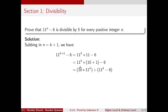On the next line, we have 11 to the k times the quantity 10 plus 1, splitting the 11 as 10 plus 1 and leaving the minus 6 as is. We then distribute 11 to the k back into the bracket, giving us 10 times 11 to the k plus 11 to the k minus 6. This isolates 11 to the k minus 6 by itself.